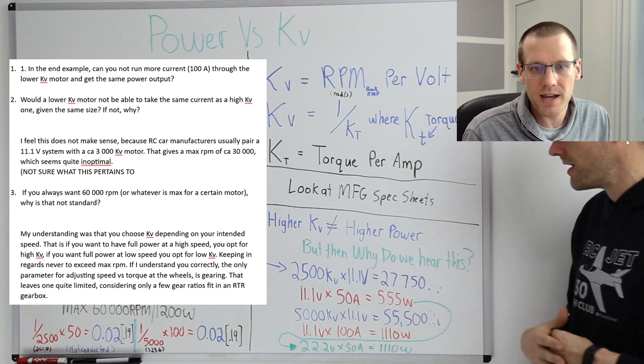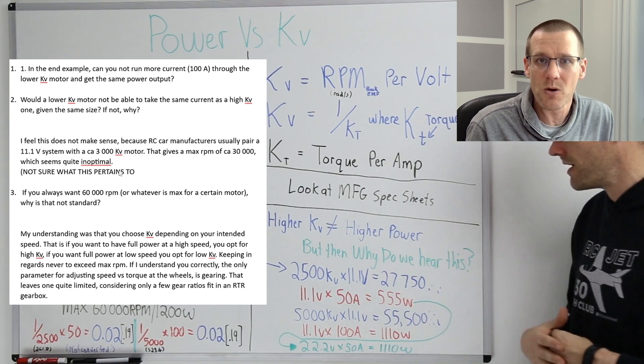And then above that it says, I feel this does not make sense because RC car manufacturers usually pair 11.1 volt systems with a 3000 KV motor. That gives a max RPM of around 30,000, which seems quite inoptimal. And I'm sure he means quite inoptimal based on what I am claiming to talk about here.